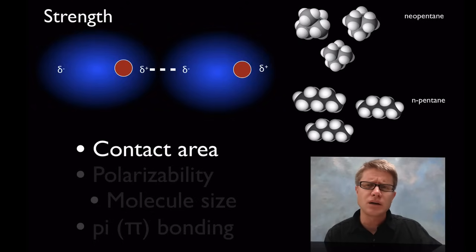So what's going to increase these London dispersion forces? Well contact area is one thing. The more electrons we can have closer to each other, the more of these forces we're going to find. So if we look over here at npentane and neopentane, they're both going to be made of the same atoms.